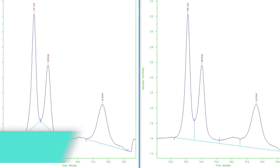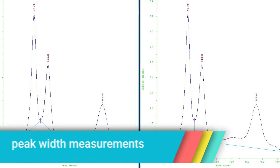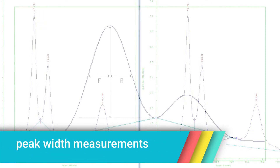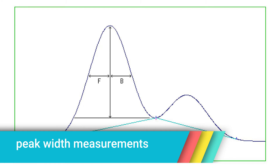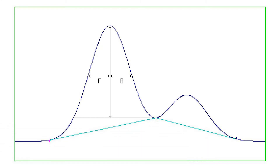Peak width measurements. The peak width is commonly defined as the full width of the peak measured at half height. The calculations are illustrated on screen now. ChromePerfect always measures peak widths using horizontal lines, even when the baseline is sloped.